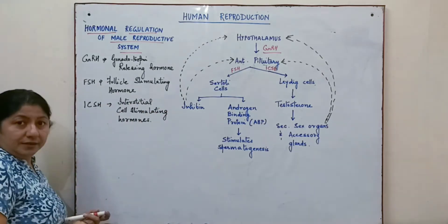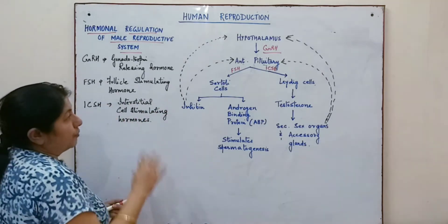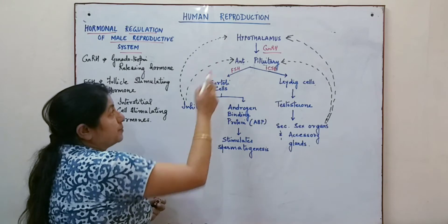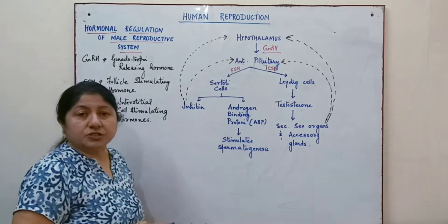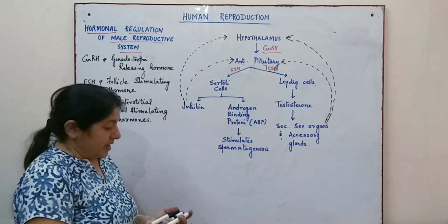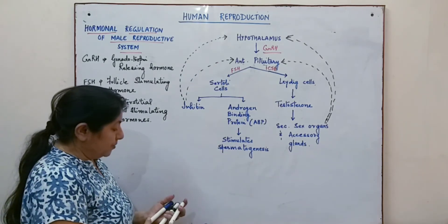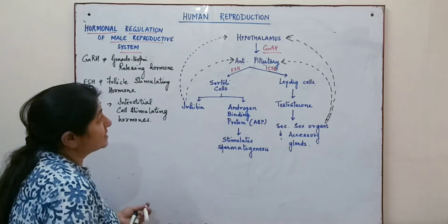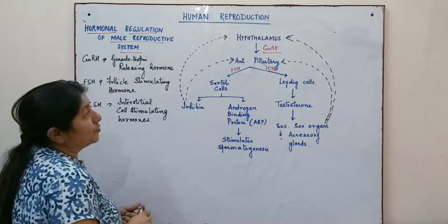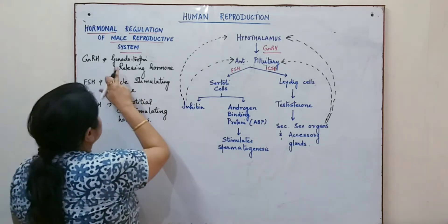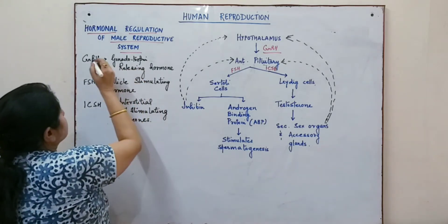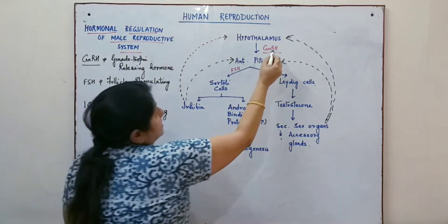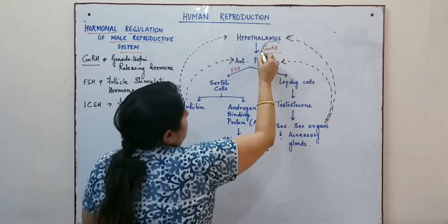Let us try and understand the role of various hormones. The hypothalamus, which is situated in the brain, gets stimulated and it releases a hormone which is known as gonadotropin releasing hormone, that is GnRH.